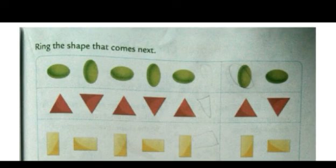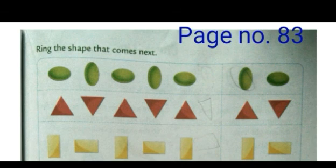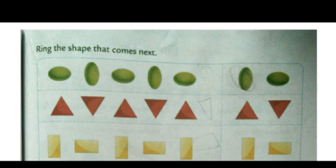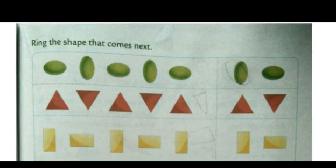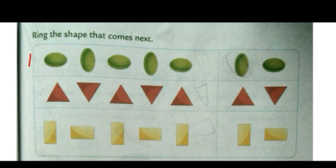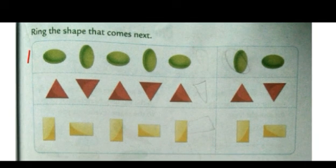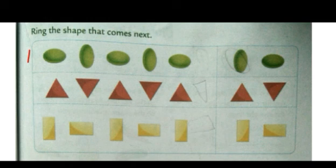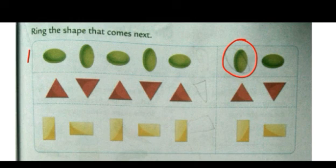Scholars, now we move on to our last page for this chapter — page number 83. See the question: Ring the shape that comes next. Few shapes are given to us and from the box we need to choose the correct one which will complete the pattern. See the first one — shapes of oval are given but the first is in horizontal form, the second vertical, then again horizontal, then vertical, then again horizontal. So what is the next shape? It will be in vertical form again. We will circle the correct one — from the two options, the next shape is this one.